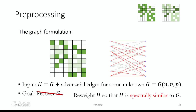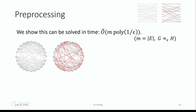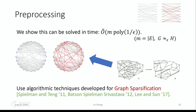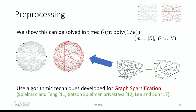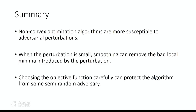We give an algorithm that can solve this graph problem in time m times poly(1/epsilon), where m is the number of edges. Our technique is based on algorithmic techniques developed for graph sparsification — which, given a dense graph, can produce a sparse graph with the same spectral property. There's a long line of work here since the seminal work of Spielman and Teng. To summarize: non-convex optimization is in general more susceptible to adversarial perturbations because even finding the global optimal requires assumptions. When the perturbation is small in magnitude, we show that smoothing can remove the bad local minima introduced by perturbation. In some other cases, for a semi-random adversary, we can modify the objective function to protect the algorithm.